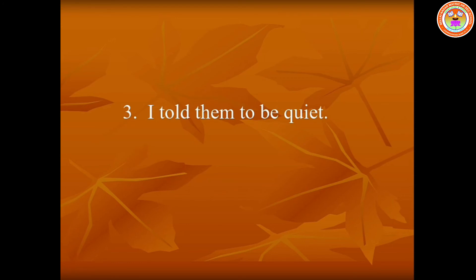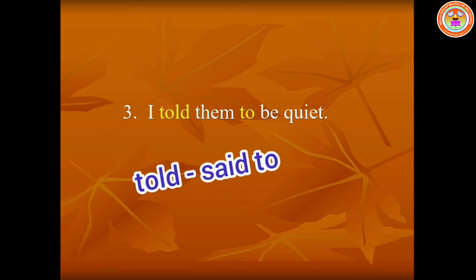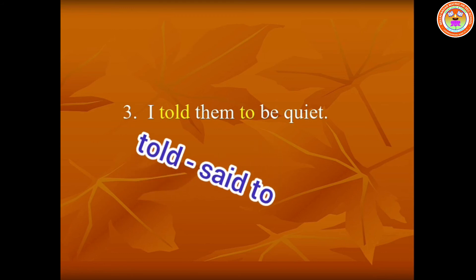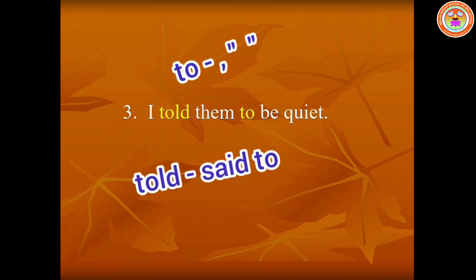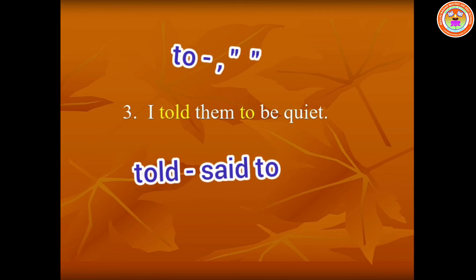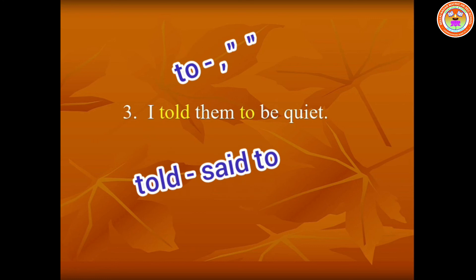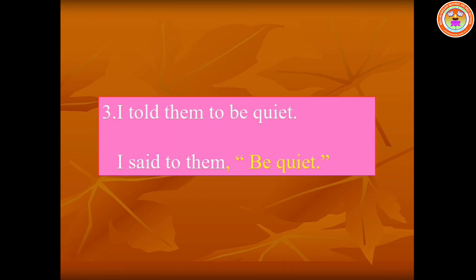Next one: 'I told them to be quiet.' In this sentence the conjunction word is 'to', so this is an imperative sentence. 'Told' should be changed into 'said to'. The answer is: I said to them, 'Be quiet.'